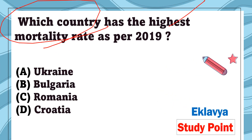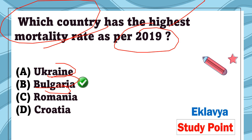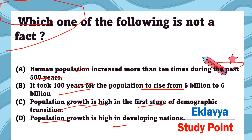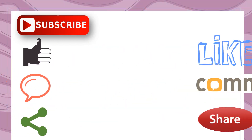Question 32: Which country has the highest mortality rate as per 2019 — Ukraine, Bulgaria, Romania, or Croatia? The correct answer is Bulgaria. Question 33: Which one of the following is not a fact — A: human population increased more than 10 times in the past 500 years; B: it took 100 years for population to rise from 5 billion to 6 billion; C: population growth is high in the first stage of demographic transition; D: population growth is high in developing nations. The correct answer is option C, because in the first stage countries are lower developed, so population growth is indeed high there — wait, option C is actually the statement that is identified as incorrect per the question framing.